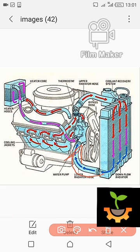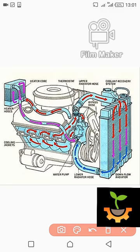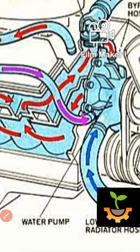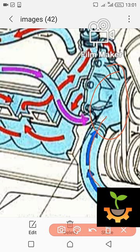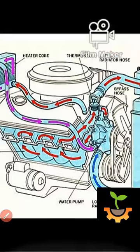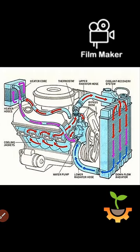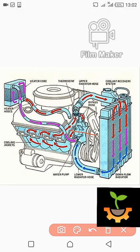The cooled coolant flows out through the lower radiator hose, as shown in the diagram, and into the water pump. The water pump receives the cold engine coolant and pumps it into the engine, where it flows through the water jackets — holes around the cylinders — so that the coolant can pick up heat from the engine. After picking up heat, it flows out and passes through the thermostat.